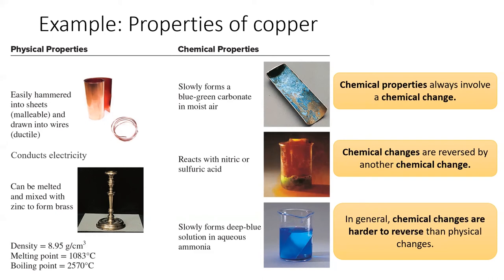Moving to the chemical properties of copper, you'll notice that every listed change on this diagram requires copper to interact with another substance and forms a new compound, including a change in color. In the top picture, copper reacts with carbon dioxide and water to become copper carbonate. In the middle picture, copper reacts with nitric acid to form copper nitrate. And in the bottom picture, copper interacts with ammonia to form a new compound — certainly not just copper anymore.